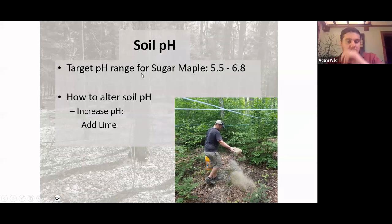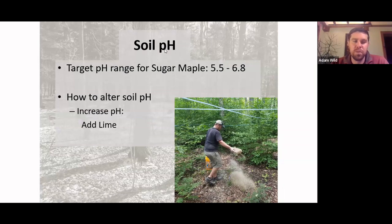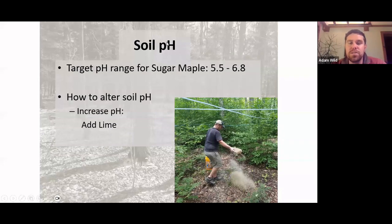Some producers are doing liming additions in their sugarbushes. The biggest challenge is getting equipment out there — especially over several acres. You can spread lime by hand or with a spreader on a small ATV. There are track machines that can shoot lime out 60 feet in either direction, which Quebec producers have been using extensively. Topography also matters — steep hills make it harder versus flatter ground.